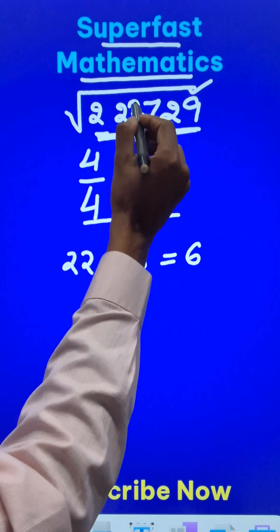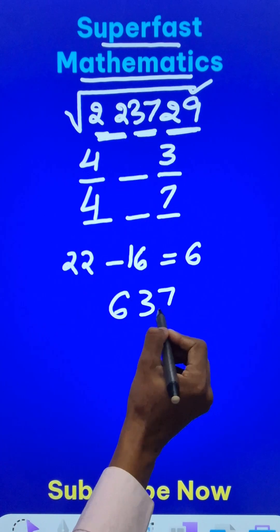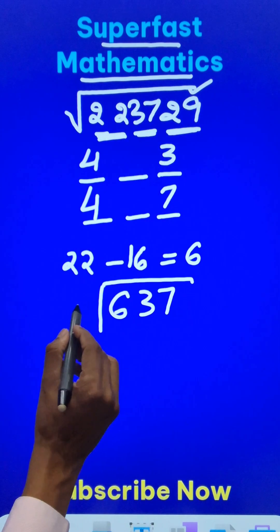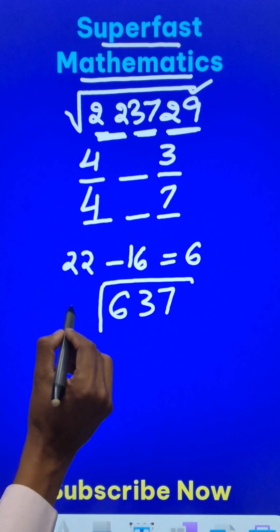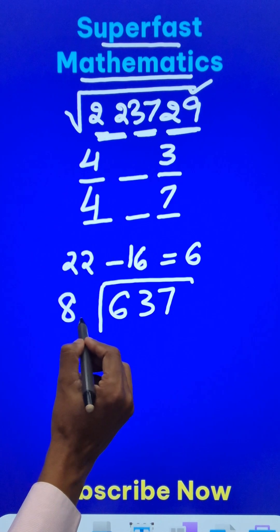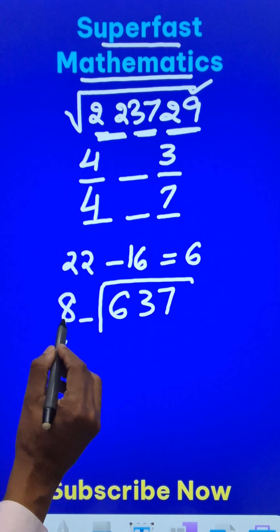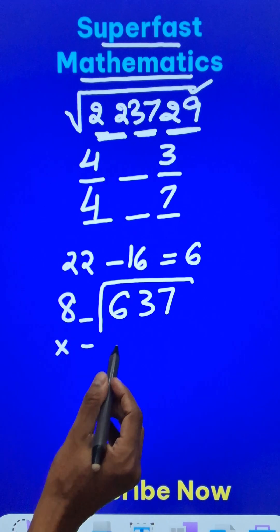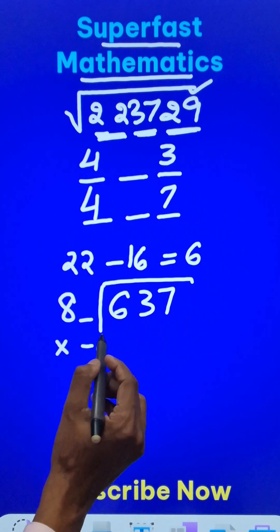Now I have to do 6 and the next pair which is 37, and on the left I will be writing the double of this number 4, that is 8. Now I need to put a single digit here so that when I multiply this double digit by the same single digit I should get close to 637.